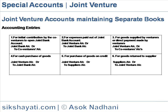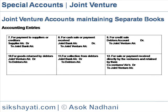For purchase of goods on credit: Joint Venture Account Debit to Supplier Account. For goods returned to supplier: Supplier Account Debit to Joint Venture Account. For payment to suppliers or creditors: Supplier Account Debit to Joint Bank Account. For cash sales or payment received: Joint Bank Account to Joint Venture Account. For credit sales: Debit to Joint Venture Account. For goods returned by debtors: Joint Venture Account Debit to Debtors Account. For collection from debtors: Joint Bank Account Debit to Debtors Account.